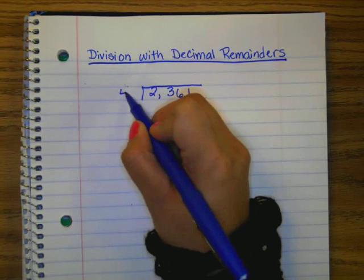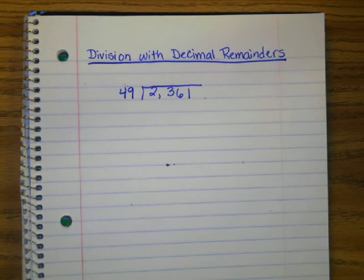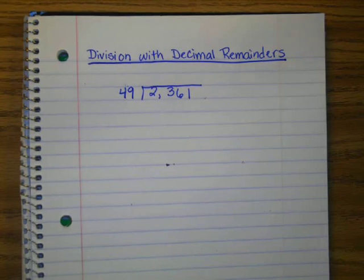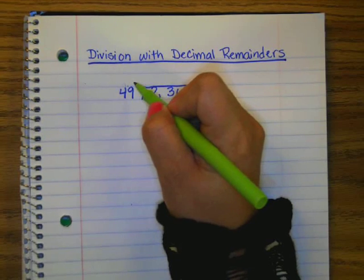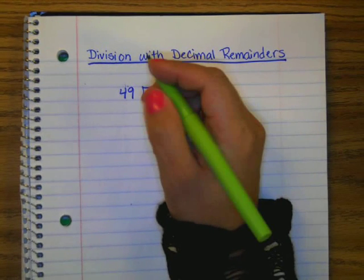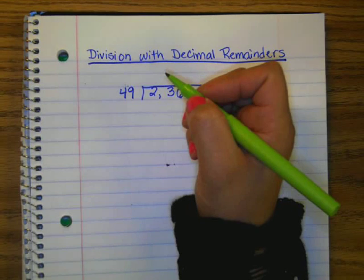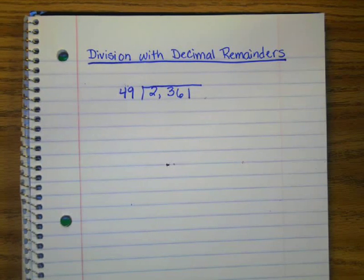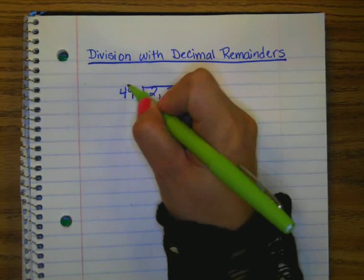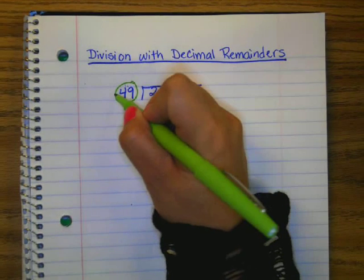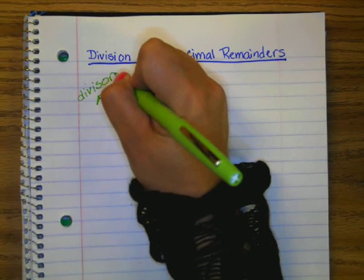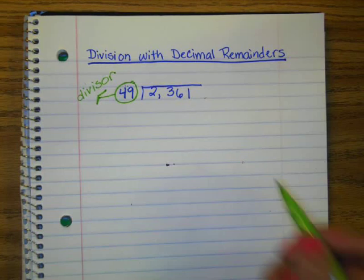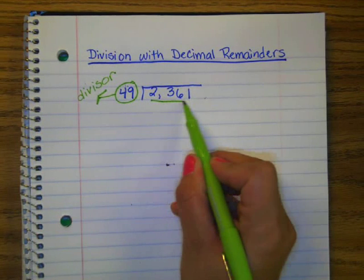So just to review, before we actually start, what do we call the 49? What is that number called? Christian? It's called the... Kyle, help him out. Okay, so in your notes, circle the 49 and label it the divisor. What do we call the 2,361? Rebecca. Dividend? Yes. That's our dividend.